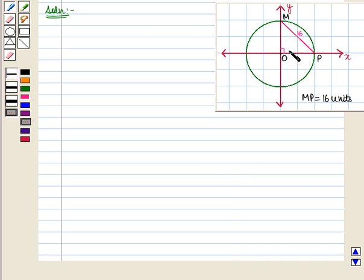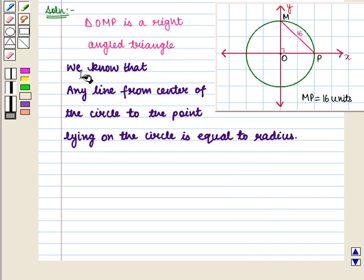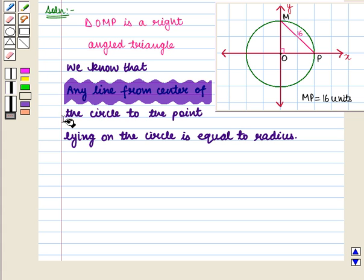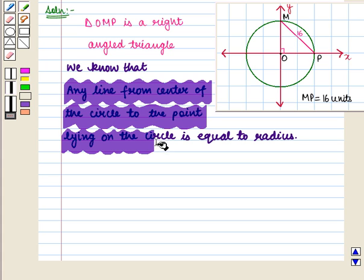And triangle OMP is a right-angled triangle. We know that any line from center of the circle to the point lying on the circle is equal to radius.